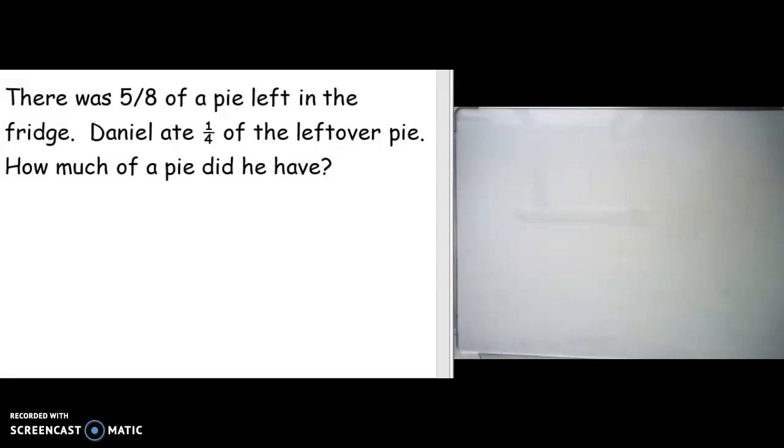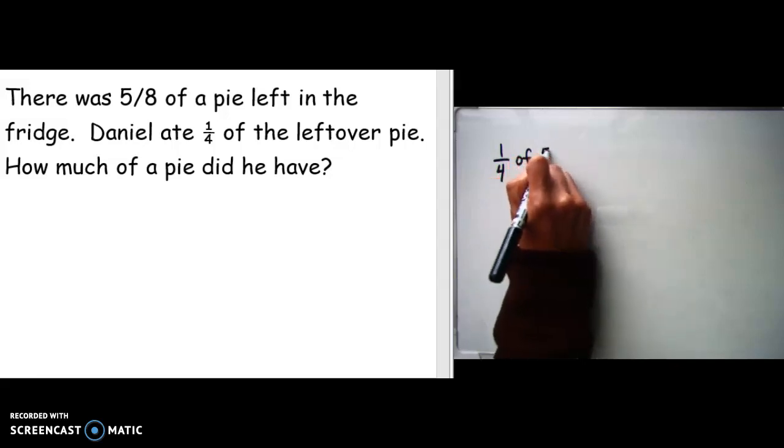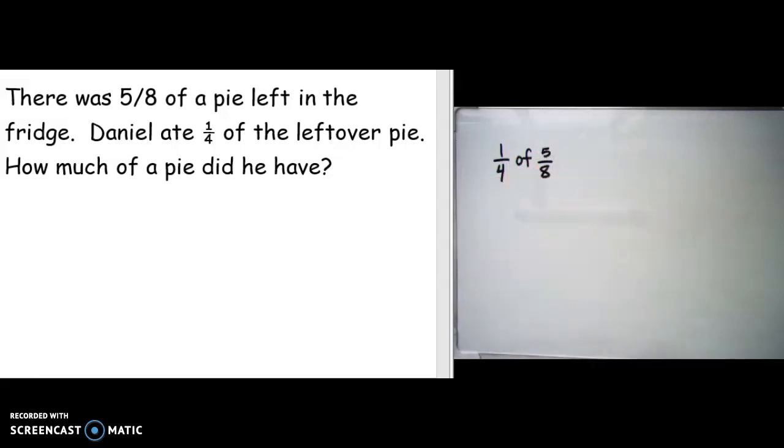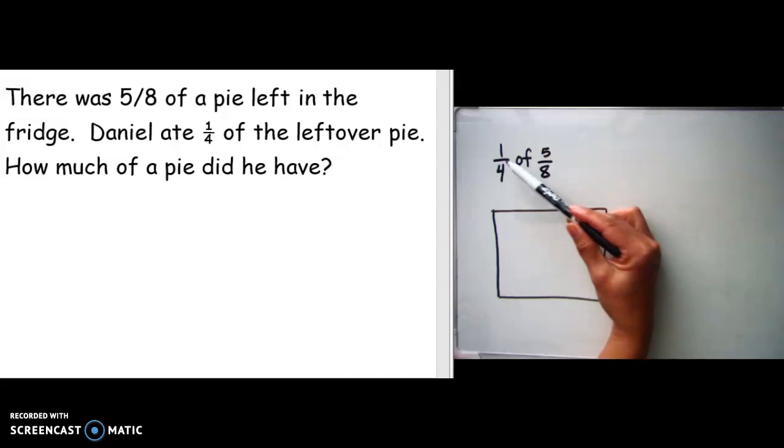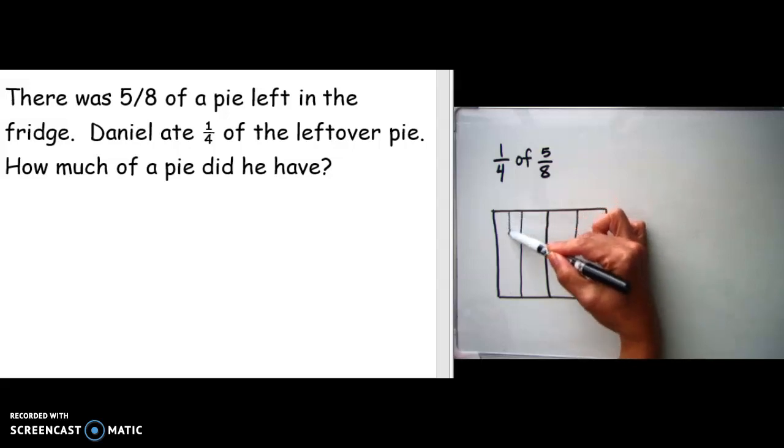So we need to find out what is one-fourth of five-eighths. I want to start with a picture and I'm going to use a rectangle to represent the pie. I'm going to divide this into eight equal parts. Divide in half, then again to get four, and then divide one more time.